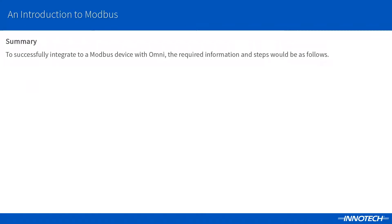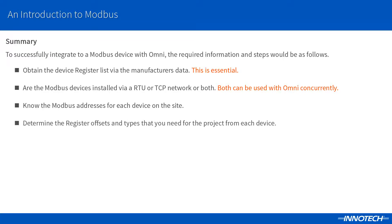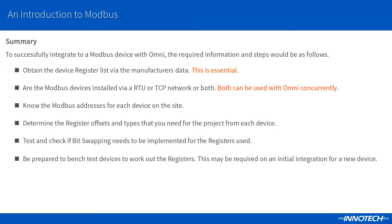To summarize the concepts covered in this presentation: the device documentation must be provided and contain adequate information for the device — without this, you will be left guessing what data is stored. Determine if the device will be connected via RTU or TCP networks or both; you can easily connect and integrate both with Omni. The device address needs to be known, including the IP addresses for TCP devices. Once connected and communicating, test a register to see if you obtained the correct value. Usually, once you read one correct value on the device, all other values should follow the same configuration. For new devices, you may need to bench test the device in a controlled environment. This can assist to locate the correct registers by reading known values, then working out the others from this reference point.